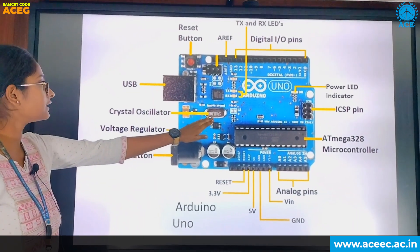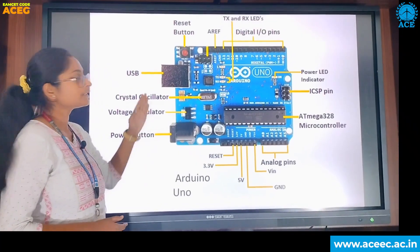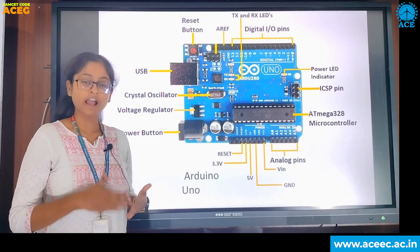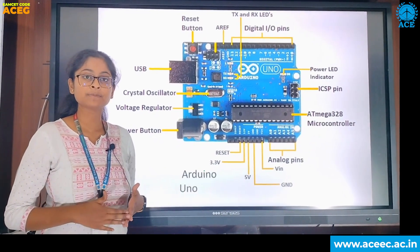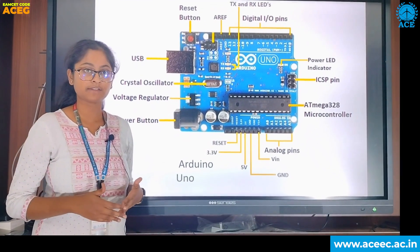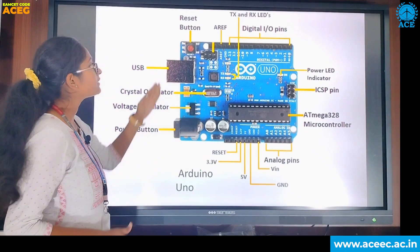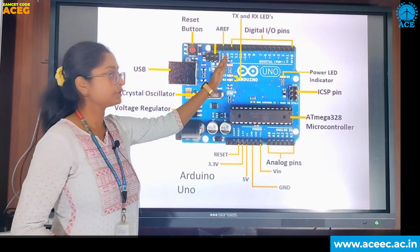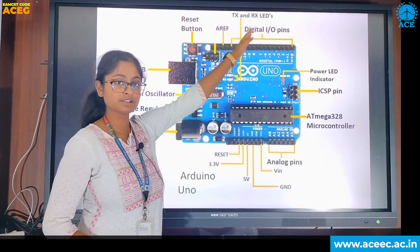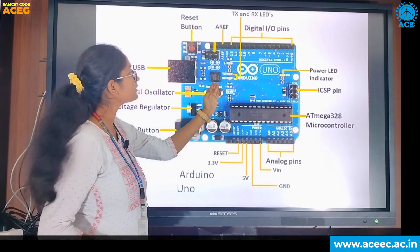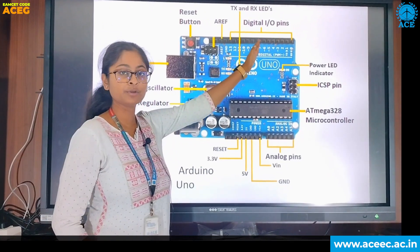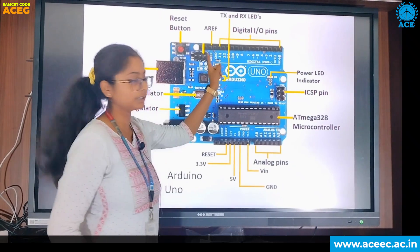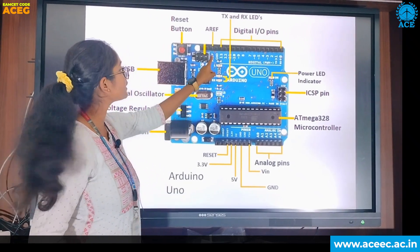This is the crystal oscillator. This is the USB which is connected to a computer where in Arduino IDE we execute programs in C or C++ language. This is the reset button. This is the AREF pin. These are the transmit and receive pins. These are the digital input-output pins, which are 14, from 0 to 13. And there is a ground pin here.